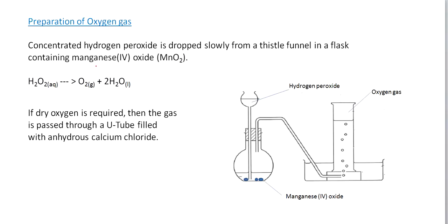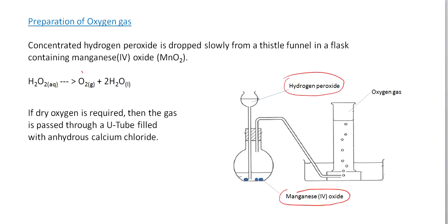Let's look at the preparation of oxygen gas. You need to be familiar with this diagram. Concentrated hydrogen peroxide is dropped slowly from a thistle funnel into a flask containing manganese dioxide. As the hydrogen peroxide reacts with the manganese dioxide, oxygen gas and water are produced. The hydrogen peroxide is decomposing to produce oxygen and water.